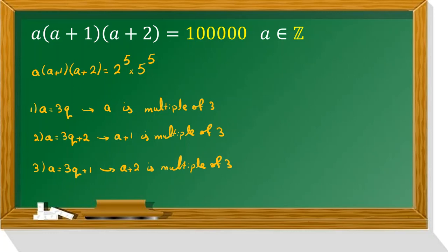Okay, so left-hand side, so from here, we conclude always, a times a plus 1 times a plus 2 is multiple of 3.